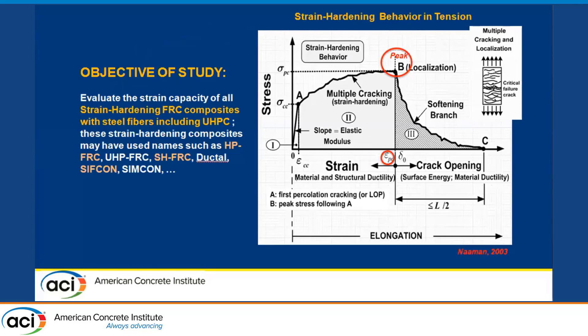We then decided we should look into the matter a little bit more, and as a result we ended up looking not only at UHPC data but also practically all strain hardening FRC materials, including SH-FRC, HP-FRC, ductile, SIFCON, SIMCON, etc.